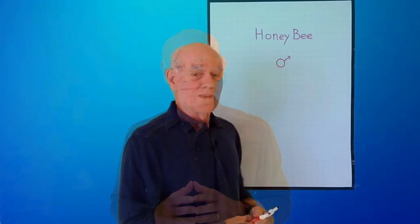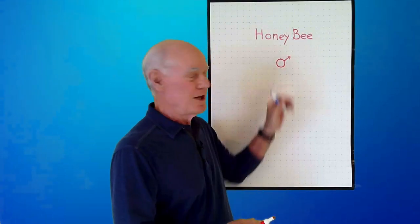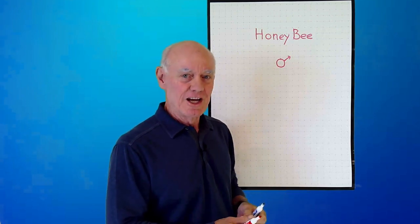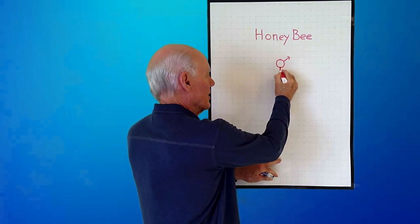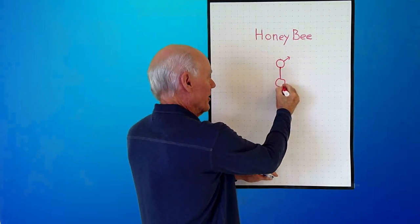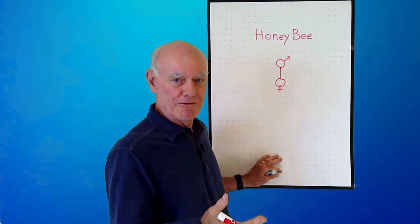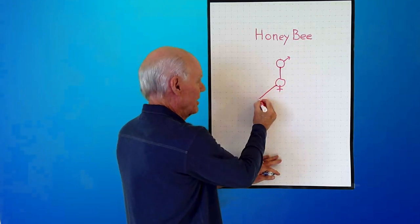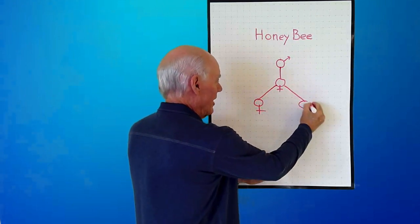Here's my favorite application of the Fibonacci sequence. I want to show you the family tree of a male honeybee. A male honeybee has one parent, its mother, because it comes from an unfertilized egg. If I start to draw in the family tree, that male honeybee has one parent, its mother. But that female has two parents, a mother and a father, because it comes from a fertilized egg. So that female has a mother and a father.